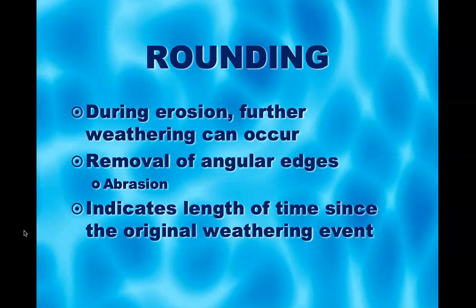During erosion, which is transportation, further weathering — breakdown — can occur. A rock rolling along in the stream bed or tumbling on the shoreline can bump into other rocks, and one or both will get some damage. That removes the angular edges — the process of rock-against-rock breakdown is abrasion. The smoother and rounder something is, the longer it has likely been out in the world; the sharper and thinner, the more recent it probably is.